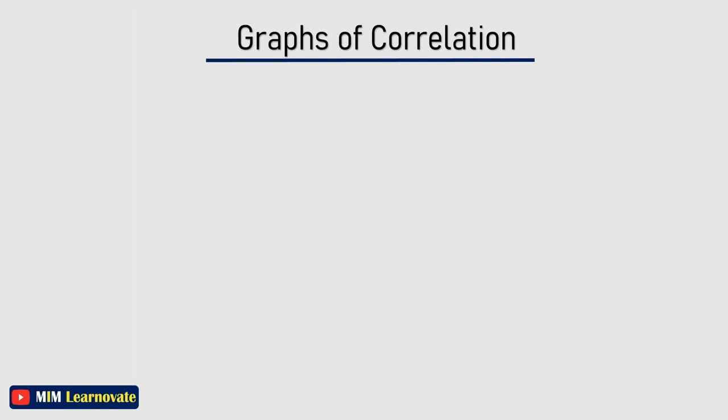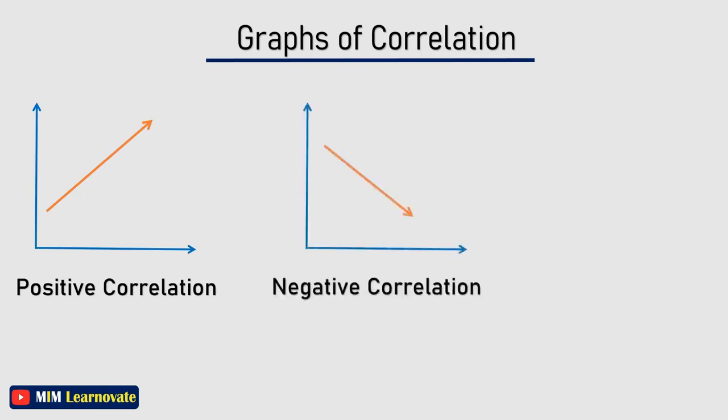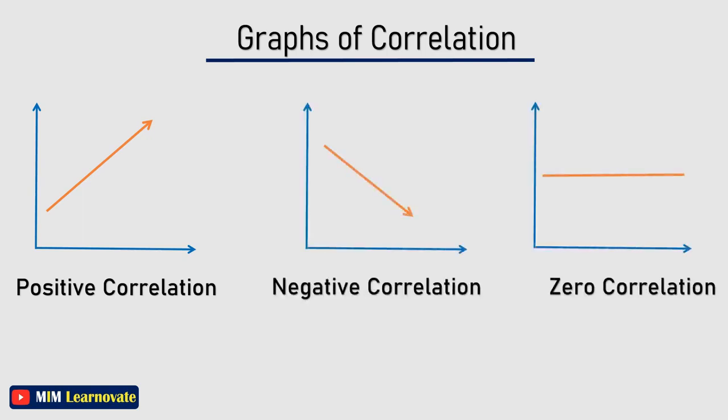On the graphs of correlation: a positive correlation graph slopes upward to the right, a negative correlation graph slopes downward to the right, and a zero correlation graph shows a parallel straight line.